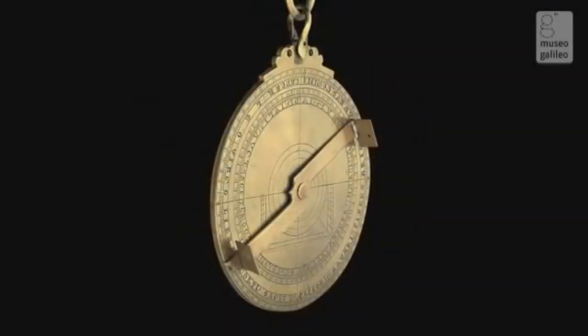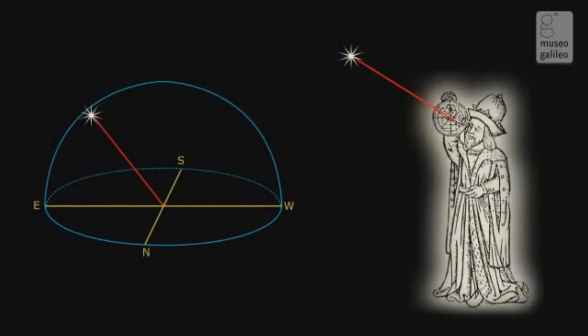First, we take the astrolabe in our hand so that the aligning straw points are directed to the position of the sun.